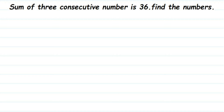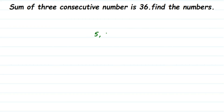Hey everyone, here's a question: sum of three consecutive numbers is 36, find the numbers. What do we mean by consecutive? When numbers come one after the other, they are called consecutive — meaning there should be no gap between numbers. For example, take five, six, seven — you can see they are consecutive because there's no gap; they are just one after the other.